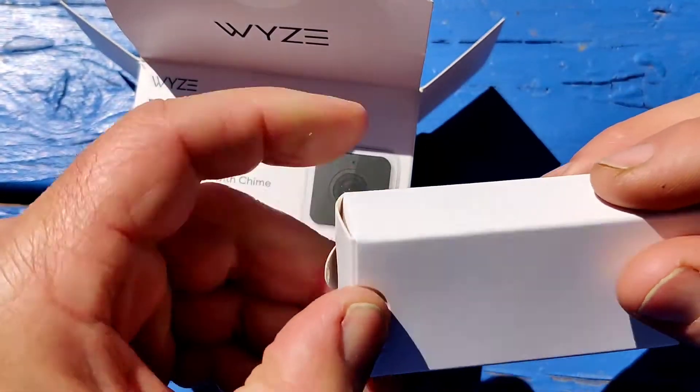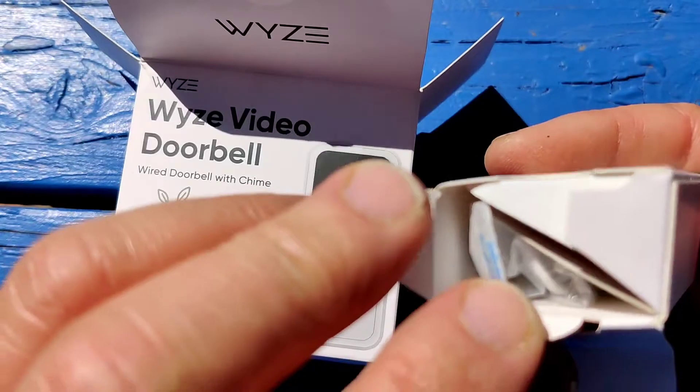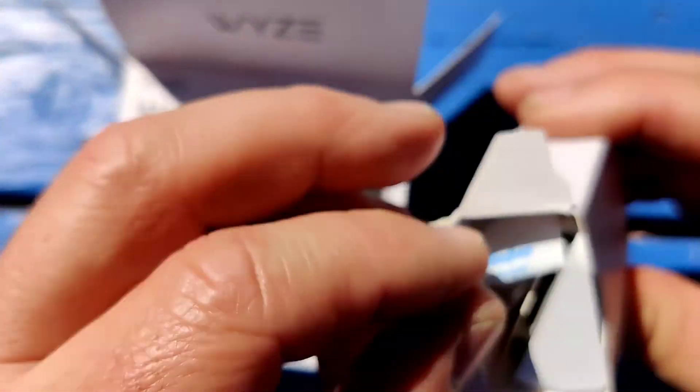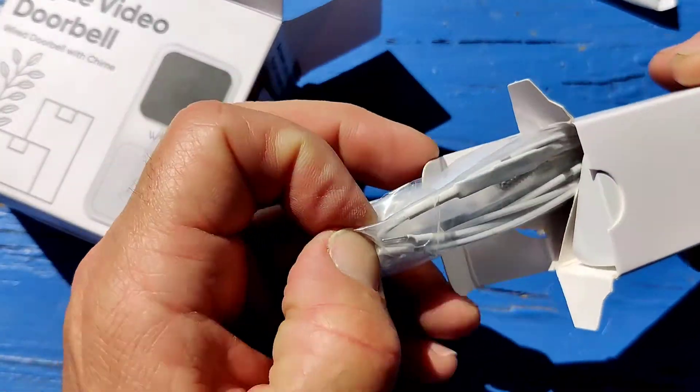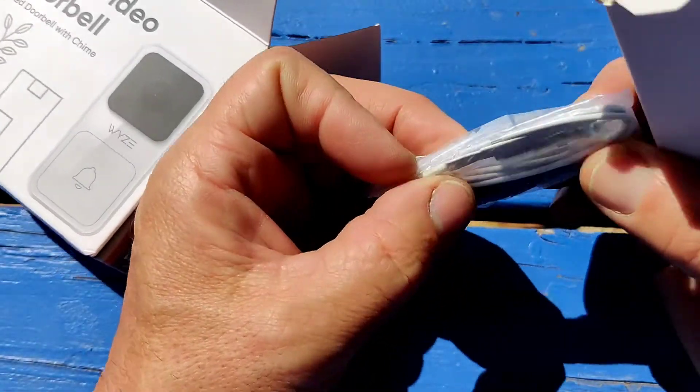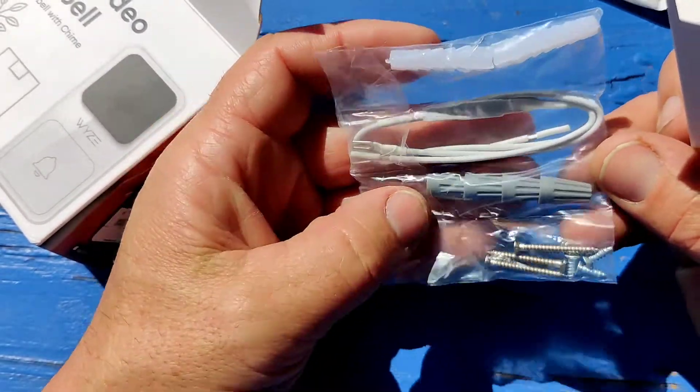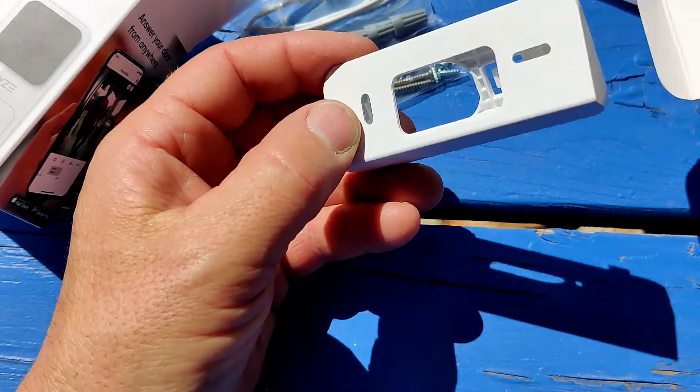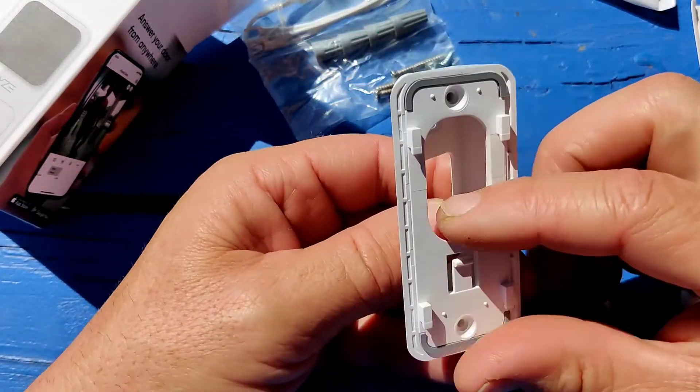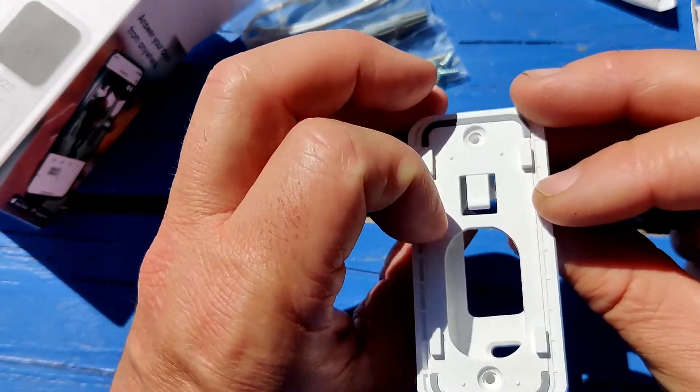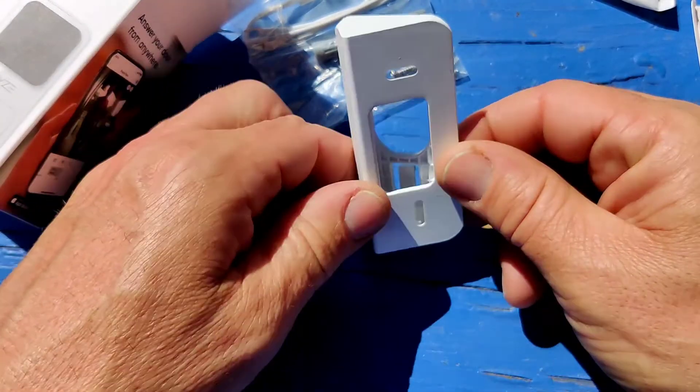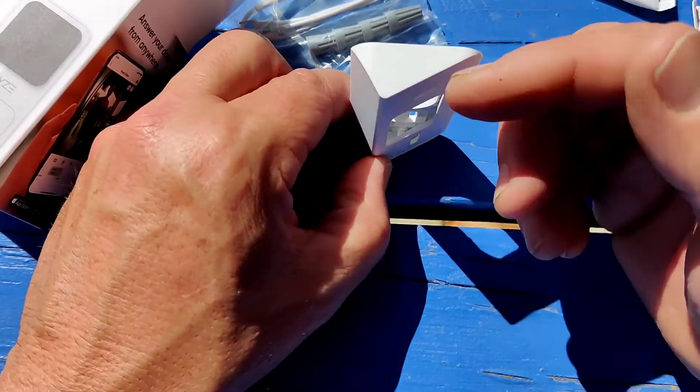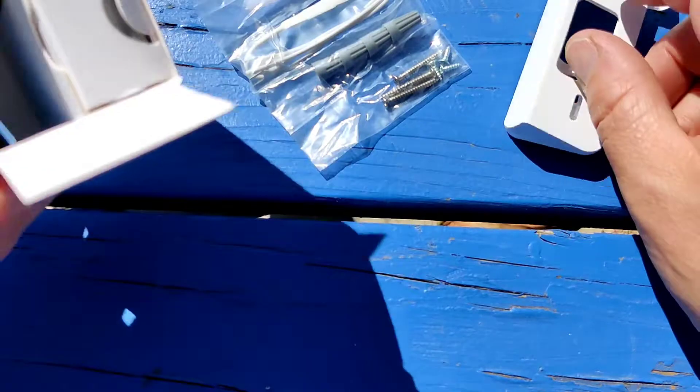This right here looks like a mounting plate. Let's see. It's an angled plate. So you have the extension wires, wire nuts, and screws. This looks like the wedge or mounting bracket for it. If you need to angle it, it's either straight or not. It looks like you can pop that off. Very straightforward.